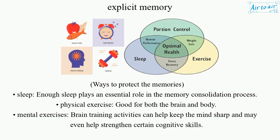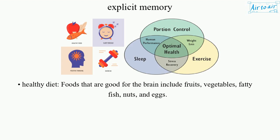There are several ways to protect memory. Getting enough sleep plays an essential role in the memory consolidation process. Physical exercise is good for both the brain and body. Mental exercises and brain training activities can help keep the mind sharp and may even help strengthen certain cognitive skills. A healthy diet is also important — foods that are good for the brain include fruits, vegetables, fatty fish, nuts, and eggs.